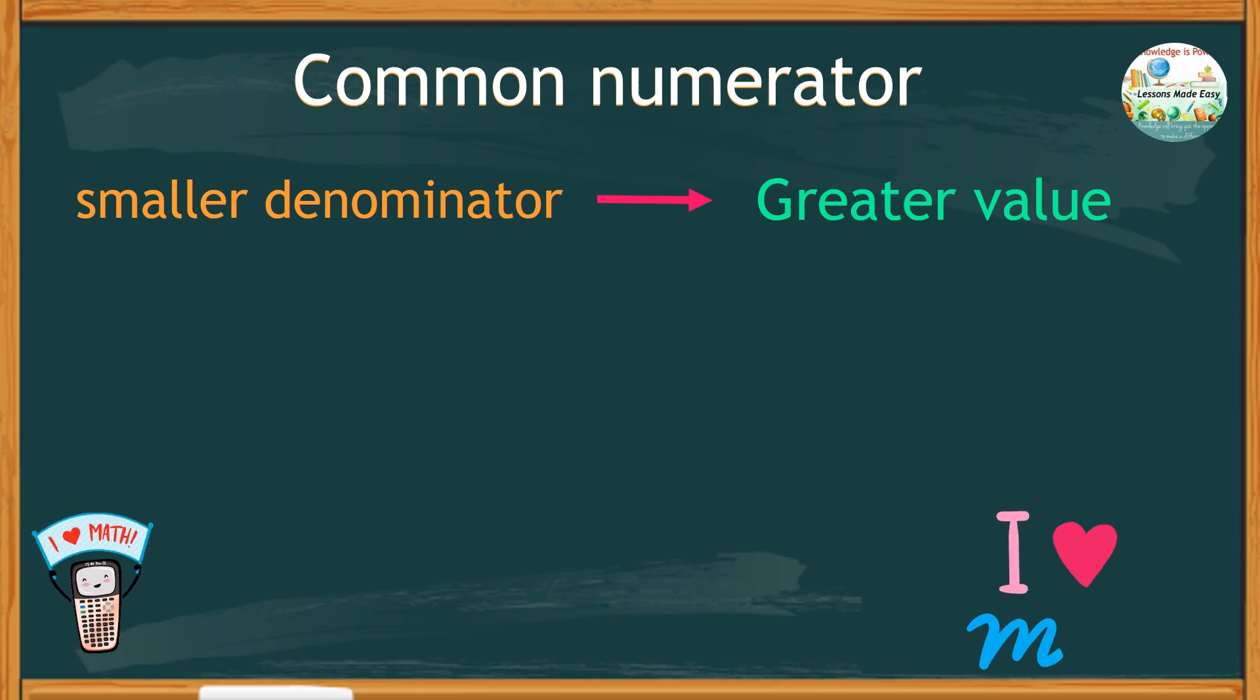Fractions with a common numerator of 9 and denominators of 2 and 5. 2 is less than 5, and therefore 9 over 2 is greater than 9 over 5.